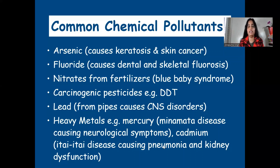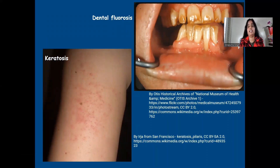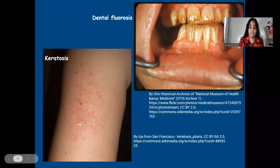I will make a short video for each disease because we cannot cover all details in one video. This image shows keratosis, which is a preliminary condition of skin cancer. When keratosis grows worse, it results in detailed skin cancer. This is dental fluorosis, in which the enamel of the tooth is degraded. Keratosis is caused by arsenic pollution and dental fluorosis is caused by fluoride pollution.